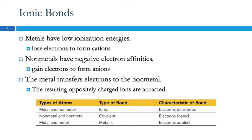So one type of bond is an ionic bond. Metals have low ionization energies — we looked at that — so they will lose electrons to form cations. And nonmetals have negative electron affinities, meaning that they release energy if you give them an electron, so they form anions.